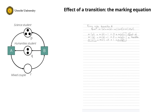I can do the same for transition B. Transition B removes no tokens from P but adds one, so M′(P) = M(P) + 1. For Q: M′(Q) = M(Q) + 1. For place R, it takes the old tokens and removes one, so M′(R) = M(R) − 1.